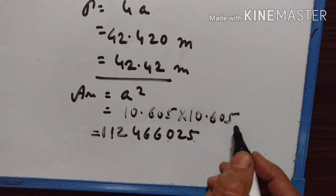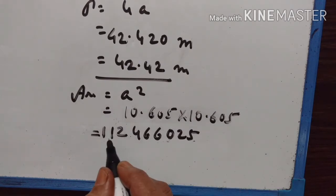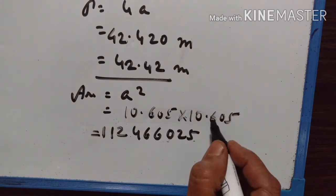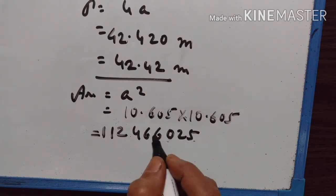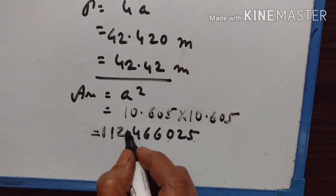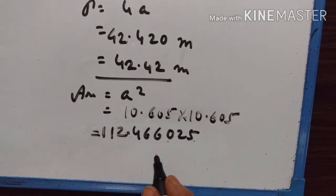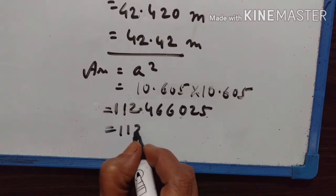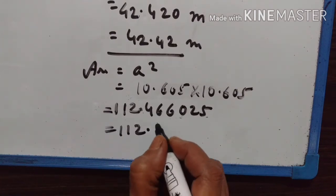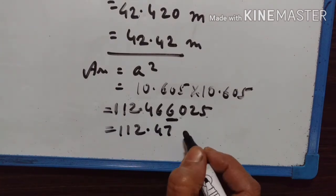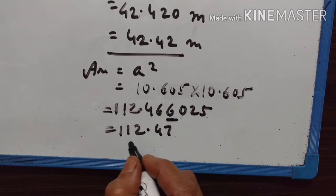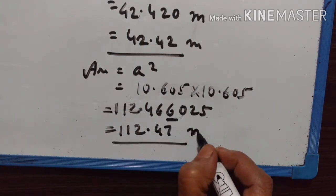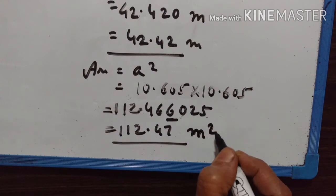10.605 into 10.605. Computing the multiplication, we get 112.47. Since the digit after is more than 5, we can increase 1 here. So area is equal to 112.47 square meters.